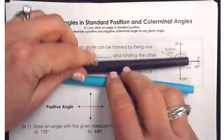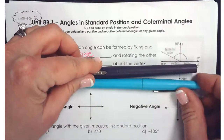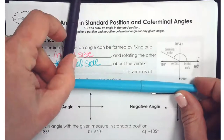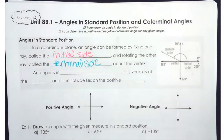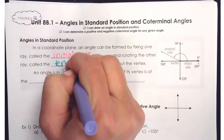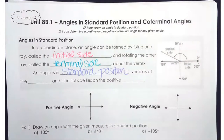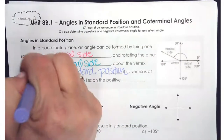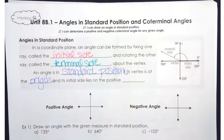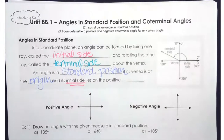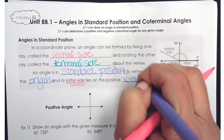We're going to rotate the terminal side about the vertex. You're going to have these two different pieces, and as the angle opens up, the angle gets bigger. An angle is in standard position if its vertex is at the origin and the initial side always lies on the positive x-axis.